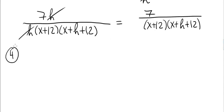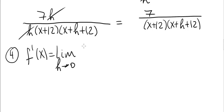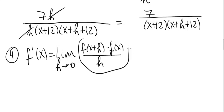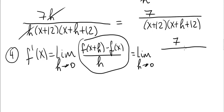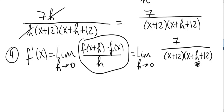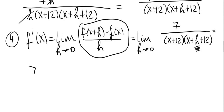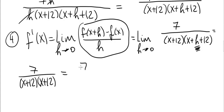Step 4 is the finished product. f prime of x is the limit as h goes to zero of f of x plus h minus f of x divided by h. We just computed this — so all we have to do is take the limit as h goes to zero of 7 divided by x plus 12 times x plus h plus 12. Note that it is h that goes to zero, not x. There's only one h here, and it goes to zero. We're left with 7 divided by x plus 12 times x plus 12, which is 7 divided by x plus 12 squared.